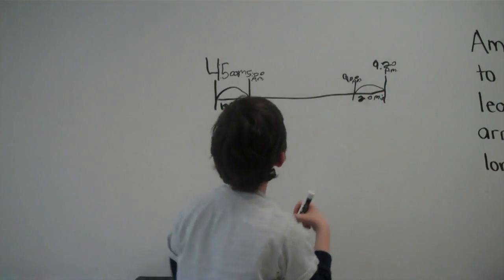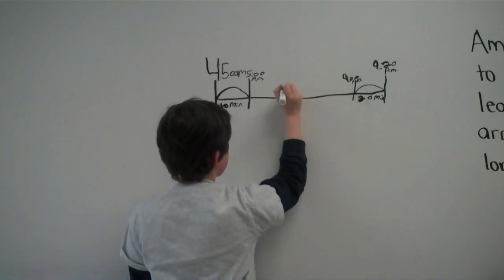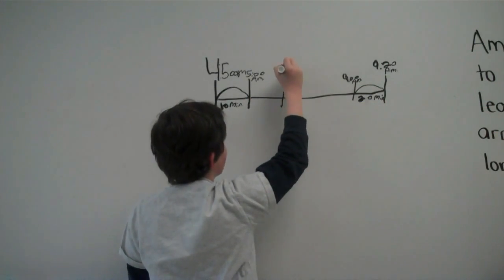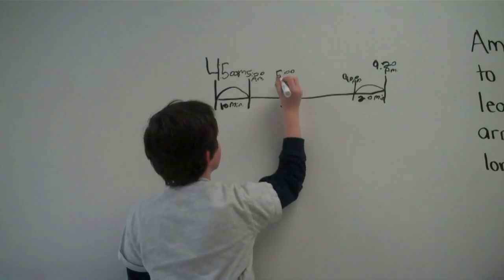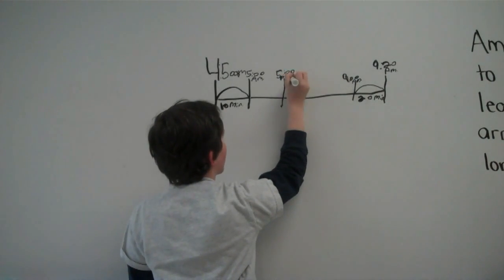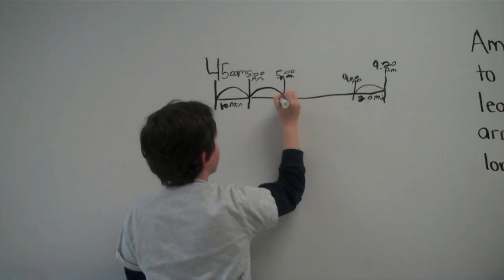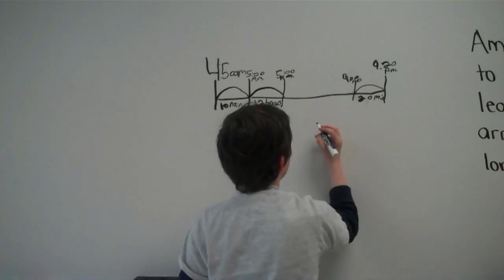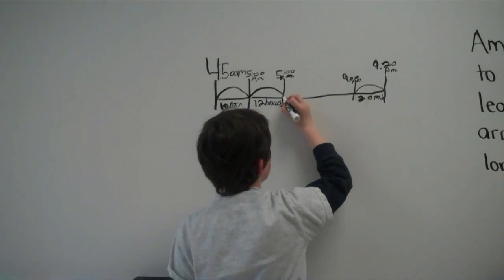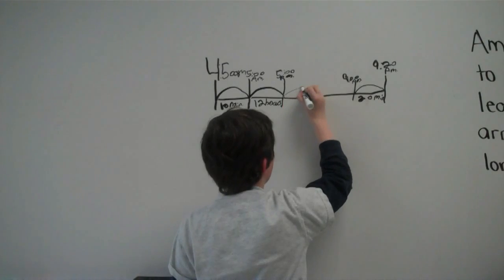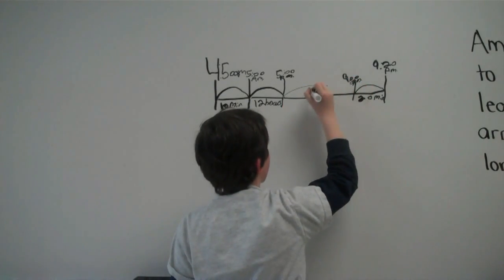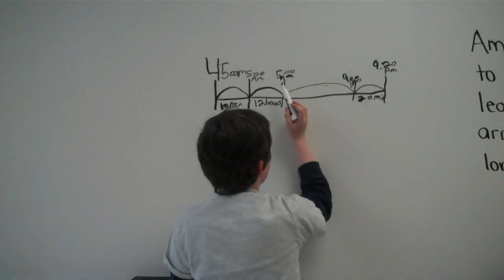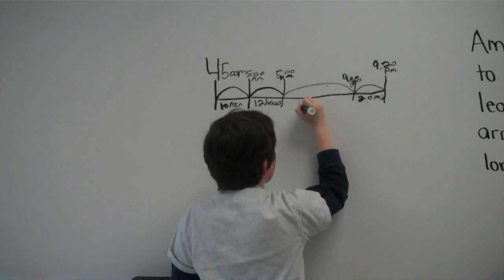Now, I have to figure out how many hours. I'm going to go to the nearest 12 hours, which would be 5 o'clock. So, I have to figure out how many hours between 5 o'clock and 9 o'clock.